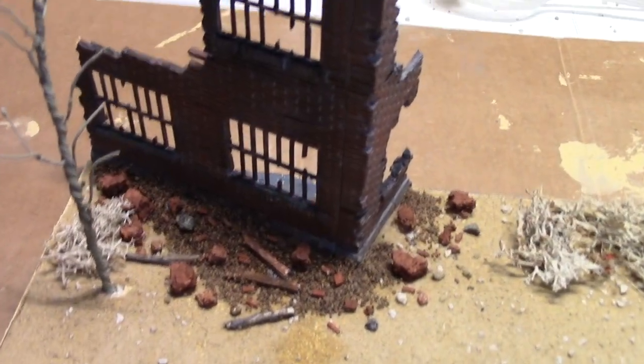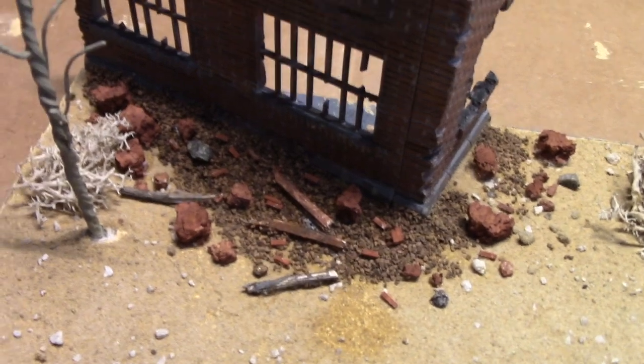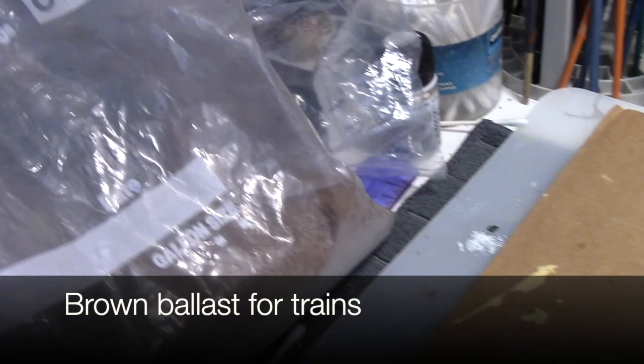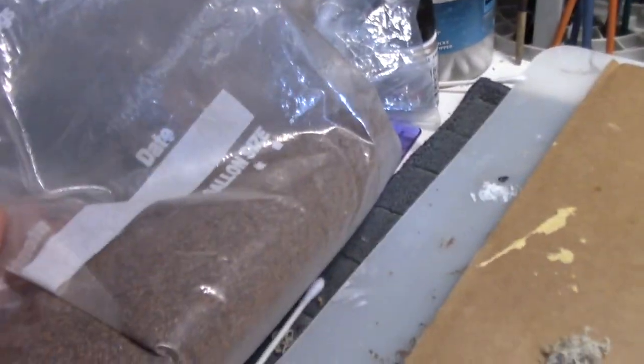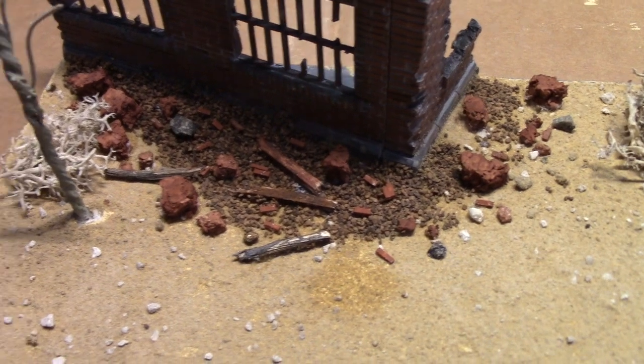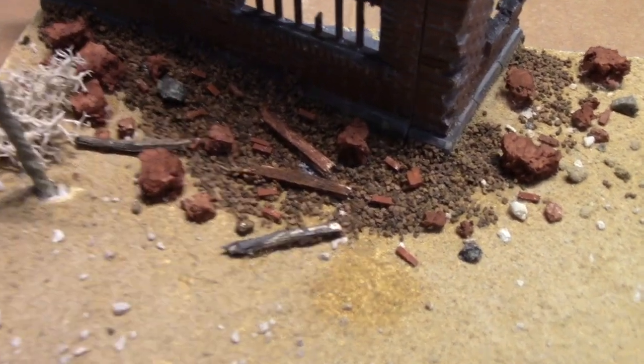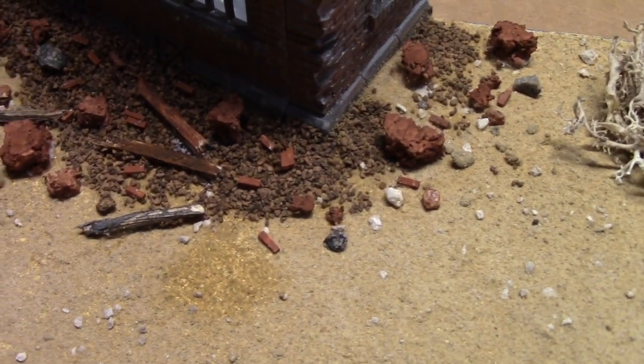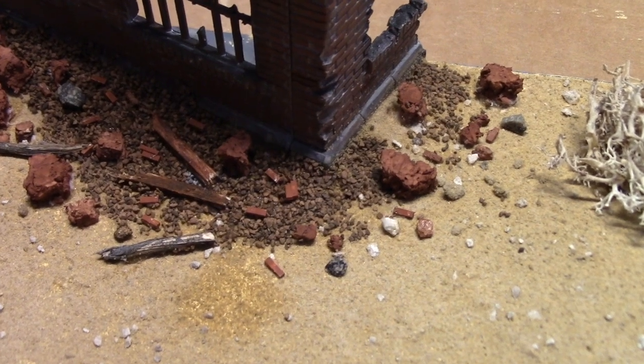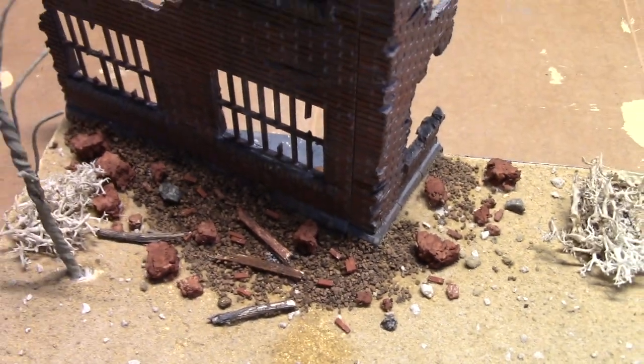All right so this is how our display base is looking. You can see at the base of the jailhouse now I've created a bunch of rubble. The finer brown stuff that you see there is just this here. This is the coarse ground cover. I just happen to have this on hand. This is the kind of stuff you can find at a train store. And we've got some cork in there that's been painted and we've got some twigs and pieces of wood. And you can see the little bricks there. Those were created by taking a piece of strip styrene and cutting them down to size and just dipping them into red paint. And all this was glued on using clear Elmer's glue.